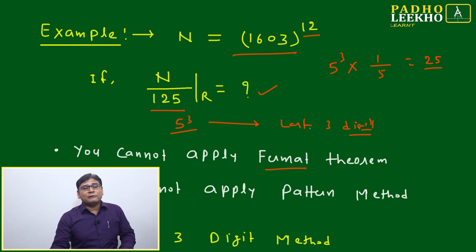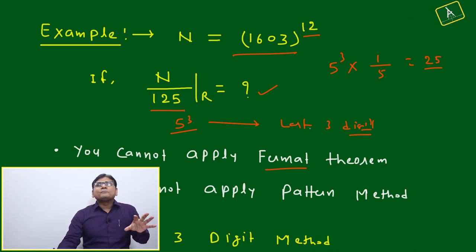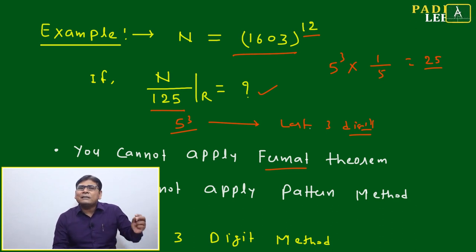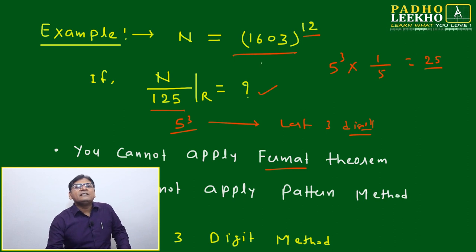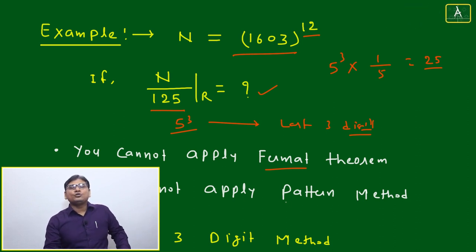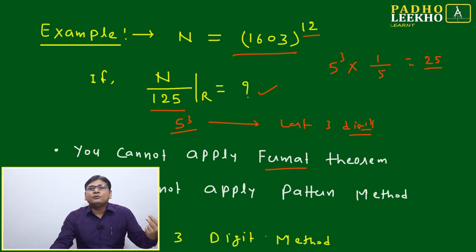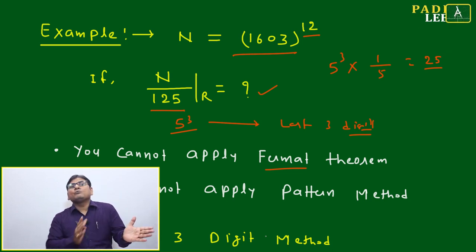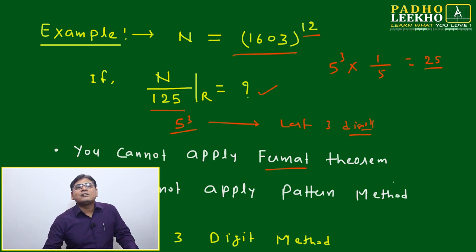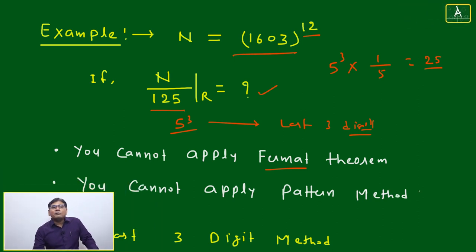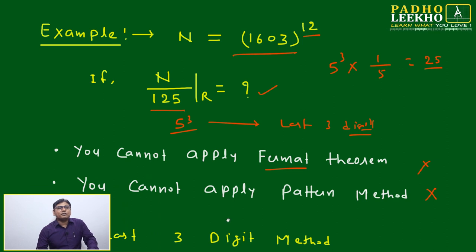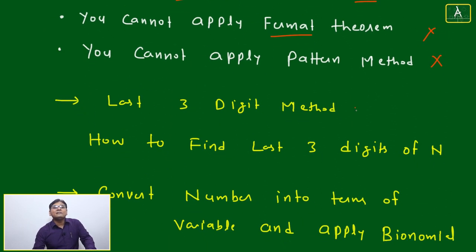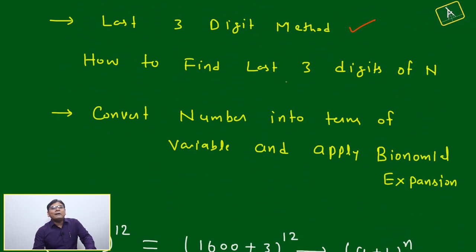Another option is the pattern method, but that is also difficult here because 1603 is a very large number. Finding the remainder of 1603 ÷ 125 and then multiplying 12 times becomes a very hectic task. So we cannot apply the pattern method, and we cannot apply Fermat's theorem. We have to apply the last three digit method.